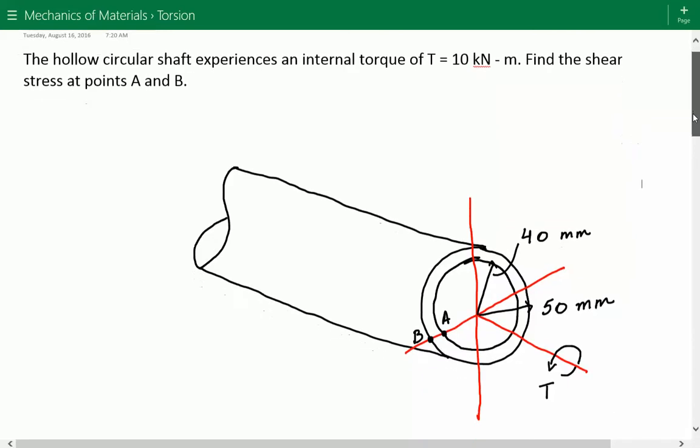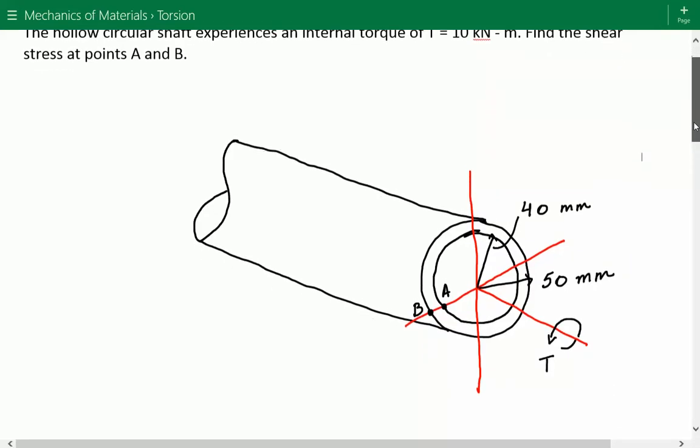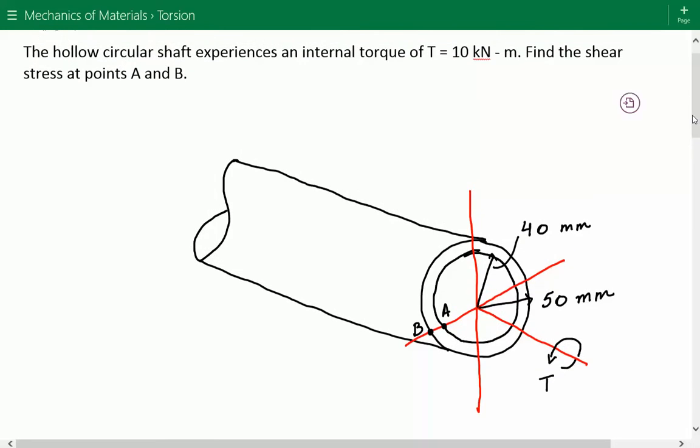So here's our tubular circular shaft and we have an internal torque equal to 10 kN·m. The inner radius of this tubular shaft is 40 mm and the outer radius is 50 mm, and we need to find the stress at point A and the stress at point B. Point A is at the location of the inner radius and B is at the edge, at the outer radius location.